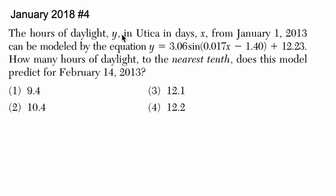Okay, so let's read it. The hours of daylight y in Utica and days x from January 1st, 2013, can be modeled using the equation y equals 3.06 times the sine of 0.017x minus 1.4 plus 12.23. How many hours of daylight to the nearest tenth does this model predict for February 14th, 2013?